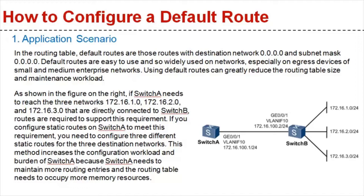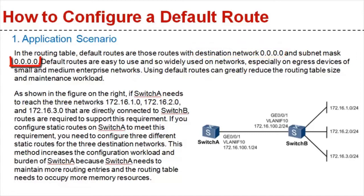In the routing table, default routes are those routes with destination network 0.0.0.0 and subnet mask 0.0.0.0. Default routes are easy to use and widely used on networks, especially on egress devices of small and medium enterprise networks. Using default routes can greatly reduce the routing table size and maintenance workload.